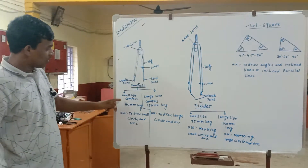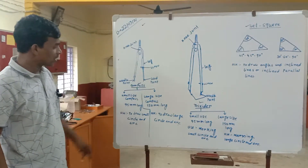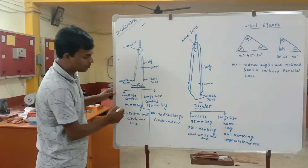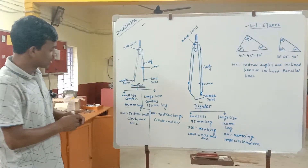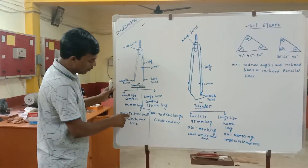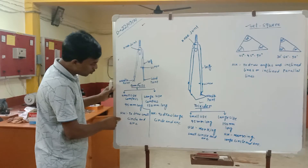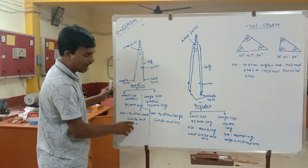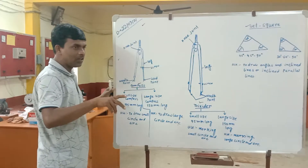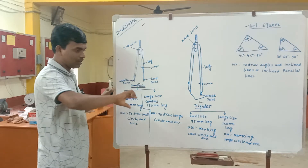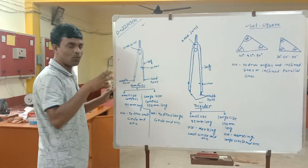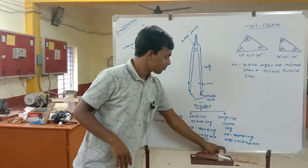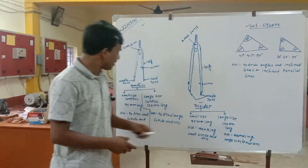The parts of the compass — the small size compass is 95 mm long and it is used to draw a small circle and arc. The arc is drawn using the small size compass. The next one is the large size compass.